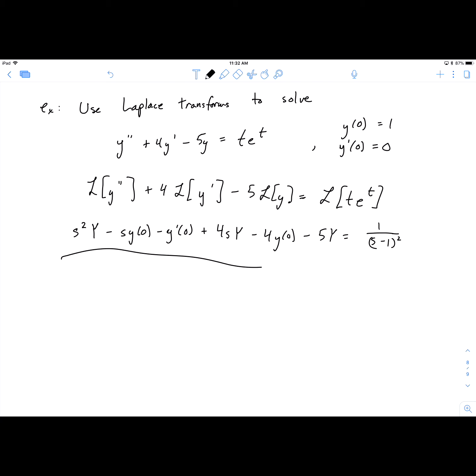So over here on the left side, we're going to collect all the terms that have a capital Y in them. We have s² + 4s - 5. And then all the terms that don't, we'll collect as well. So we have this one, this one, and this one.